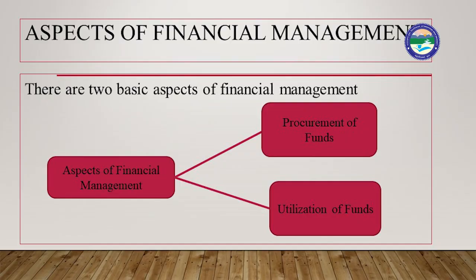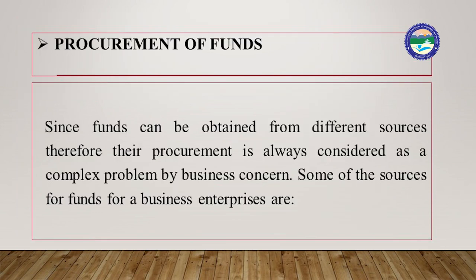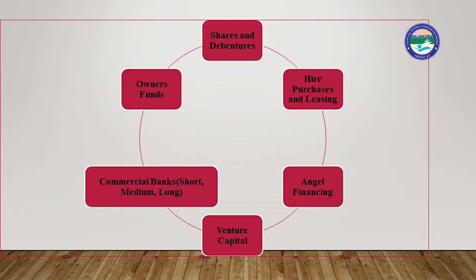Next are the aspects of financial management. The term refers to the different components involved in the process of managing an enterprise's financial resources. There are two aspects or components of financial management: the procurement of funds and the utilization of funds. Since funds can be obtained from different sources, different alternatives are available to enterprises, and their procurement is always considered a complex problem by business concerns.